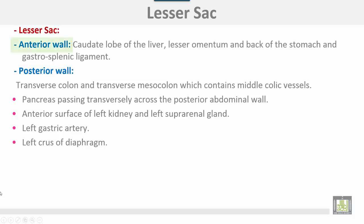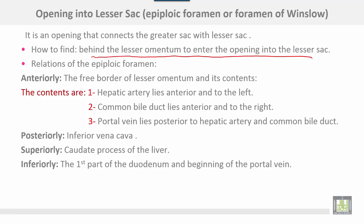The lesser sac is formed by an anterior wall which, from above downwards, consists of: the quadrate lobe of the liver, the lesser omentum, the back of the stomach, and the gastrosplenic ligament. The posterior wall is formed by the transverse colon and transverse mesocolon containing the middle colic vessels, the pancreas passing transversely across the posterior abdominal wall, the left gastric artery, and the left crus of the diaphragm. The opening into the lesser sac connects the greater and lesser sacs. To find this opening, you pass your finger behind the free border of the lesser omentum to enter the lesser sac.